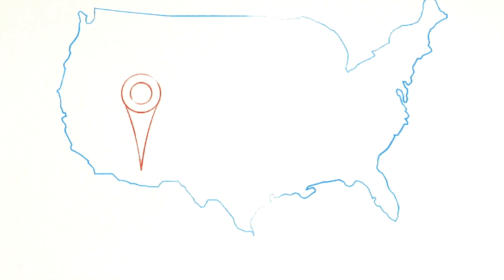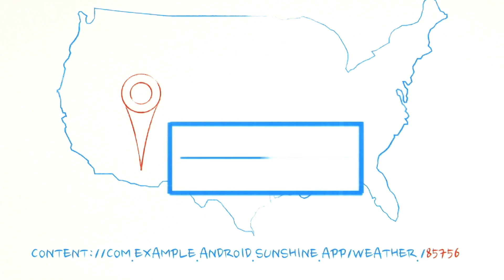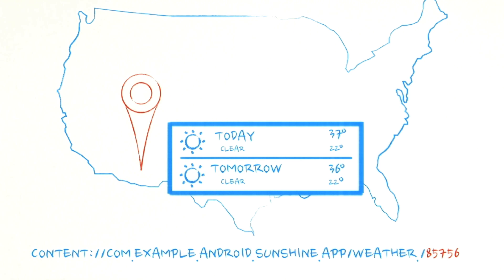We can have views display different data based upon which URI is currently active. A URI is the primary data member for those intents that Reto so gloriously described. With a combination of content providers and intents, one can nicely decouple the data being displayed from the view.